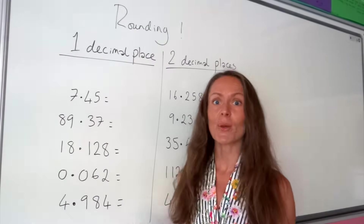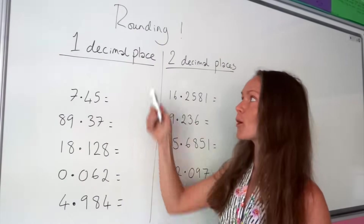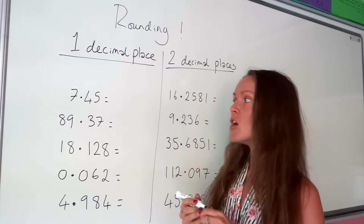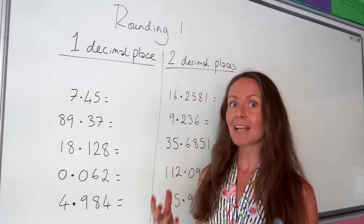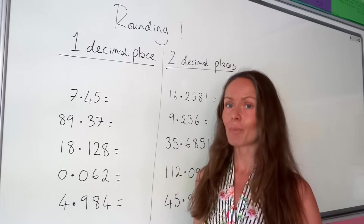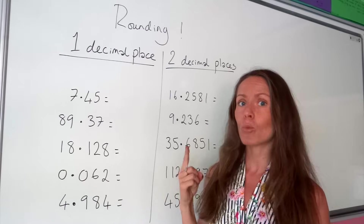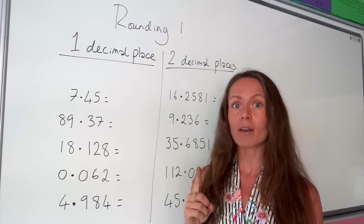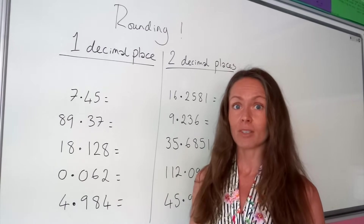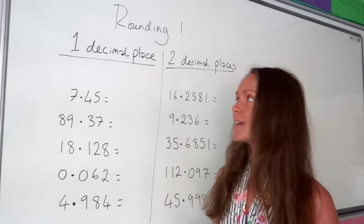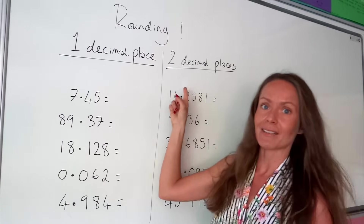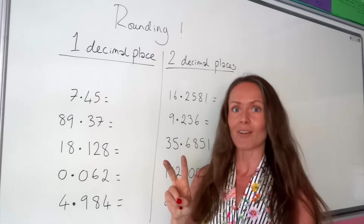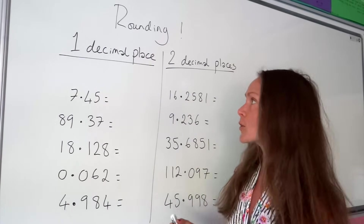Hey guys, today I'm going to show you how to round to both one decimal place and two decimal places. When we're rounding to one decimal place, we expect to have only one number after the decimal place. And when we're rounding to two decimal places, we can expect to have two numbers after the decimal place.